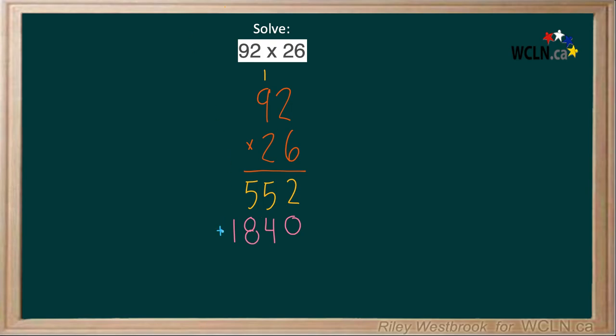Now we add everything together. 2 plus 0 is 2. 5 plus 4 is 9. 5 plus 8 is 13, carry the 1.